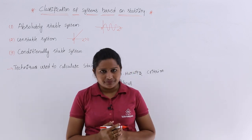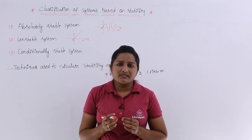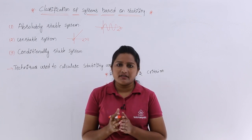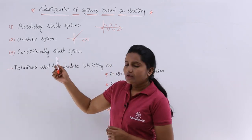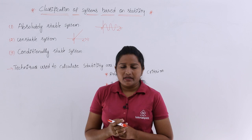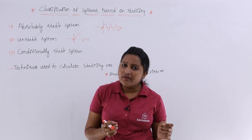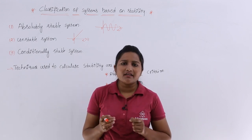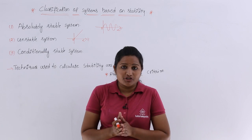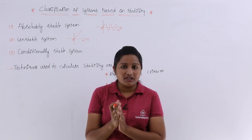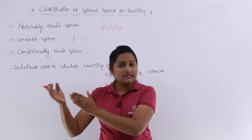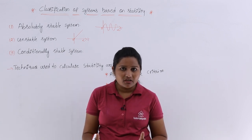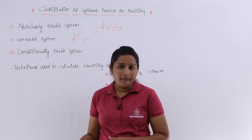Coming to conditionally stable system. A conditionally stable system will provide finite response in a limited period of parameter variance. With all variations of its parameters, if the system is having finite output for a limited duration, then we can say that is a conditionally stable system. After that condition, the system may be stable or unstable — it may produce unbounded output.